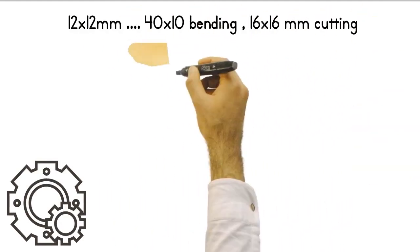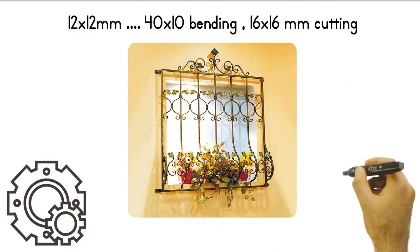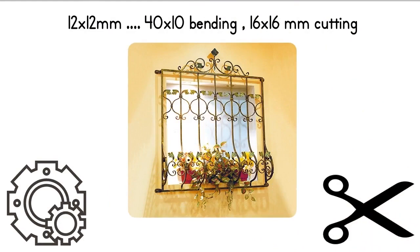The machine has a very powerful 4kW engine with a high tonnage piston. You can easily bend and cut 40 by 10mm irons.